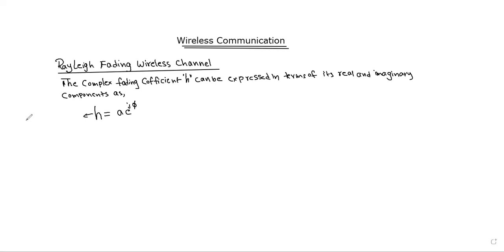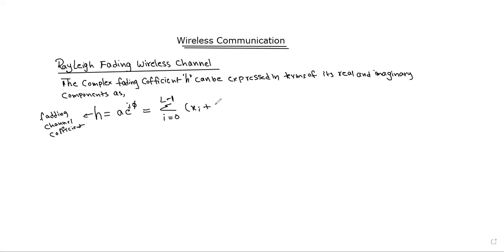The fading channel coefficient H equals the summation from i = 0 to L−1 of x_i plus j·y_i — that is, the real part x_i and the imaginary part j·y_i. So H = X + jY.